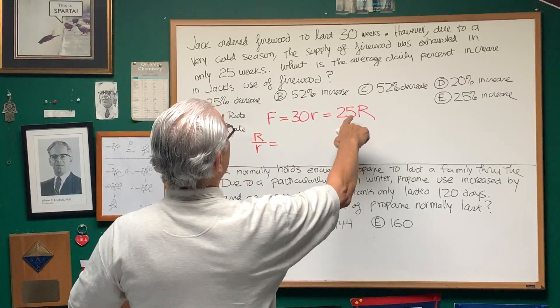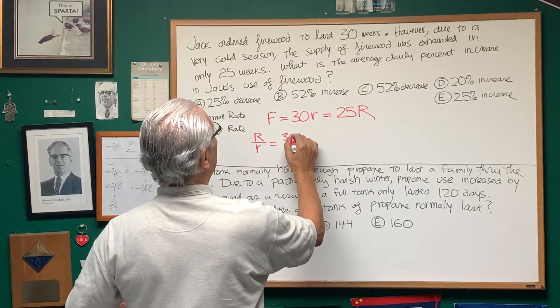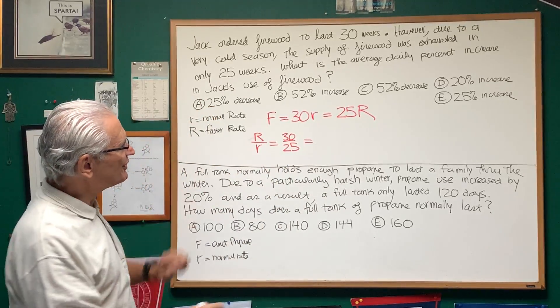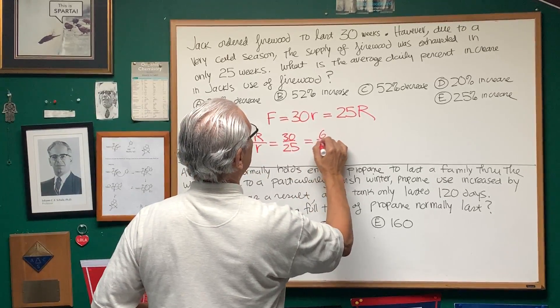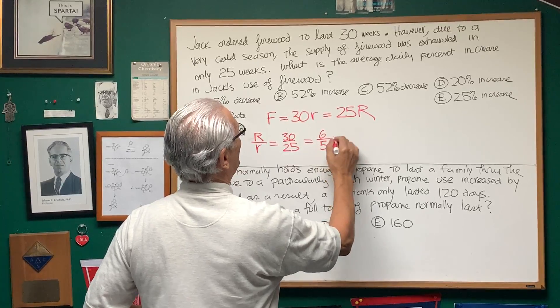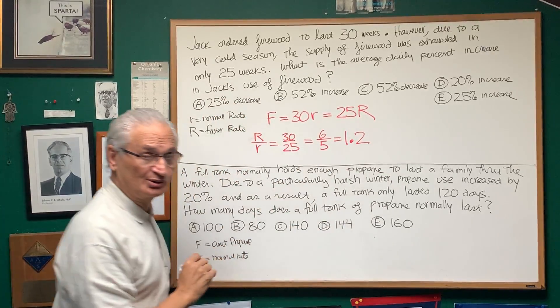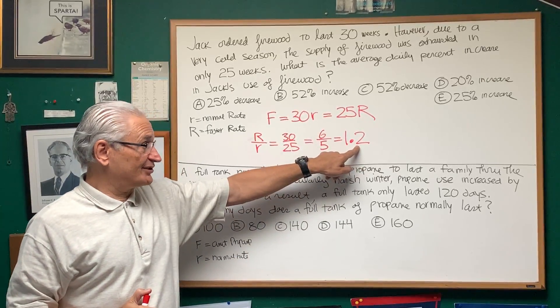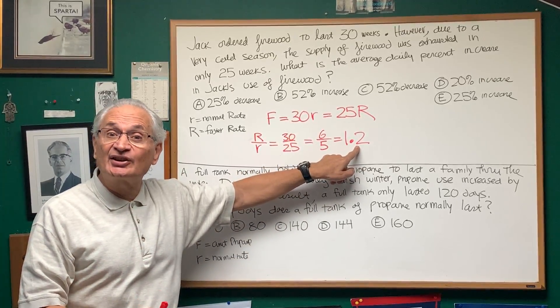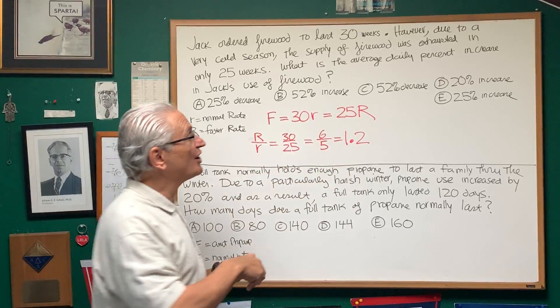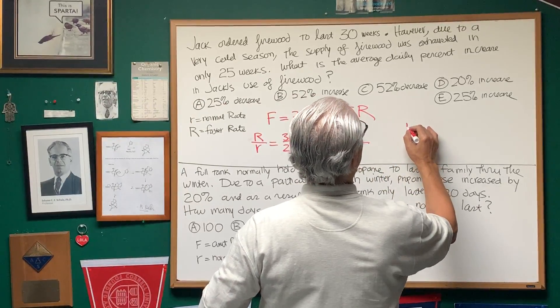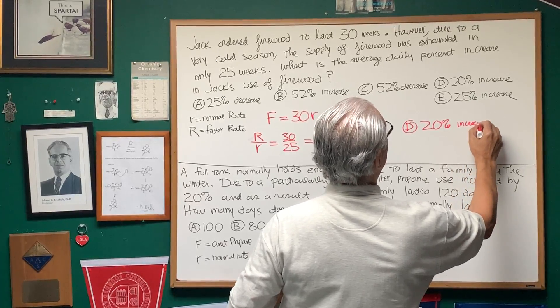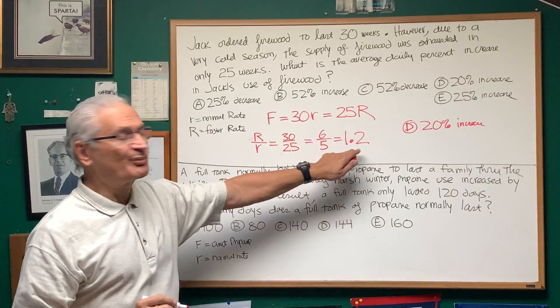So how do we do this? Let's divide both sides by 25. We'll get 30 divided by 25. Let's reduce this. 5 goes into 30 six times, 5 goes into 25 five times. This turns out to be 1.2. So what does that tell us? This tells us that 1.2 means there's a 20% increase in the use of firewood. So the answer is choice D, a 20% increase, as inferred from this fraction of 1.2.